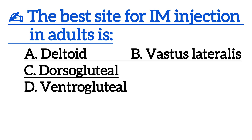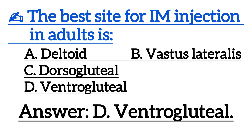The best site for IM injection in adults is — correct answer is option D: Ventrogluteal.